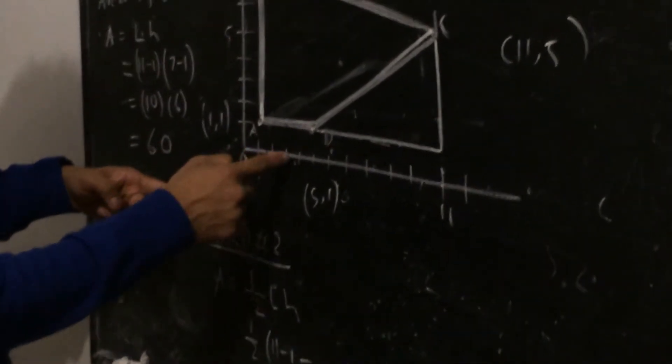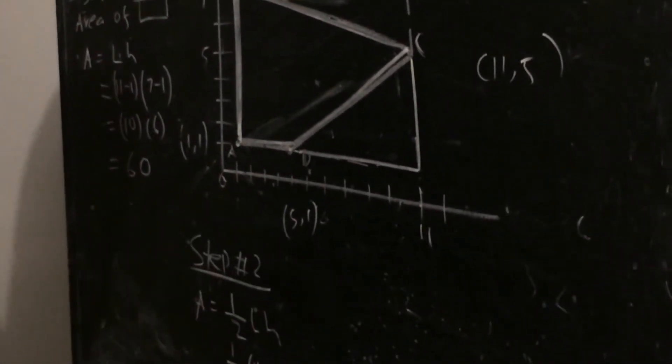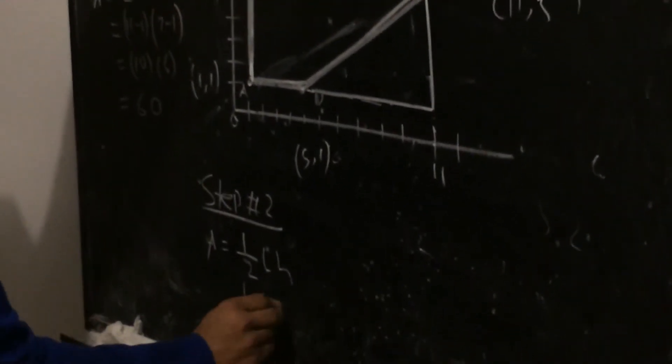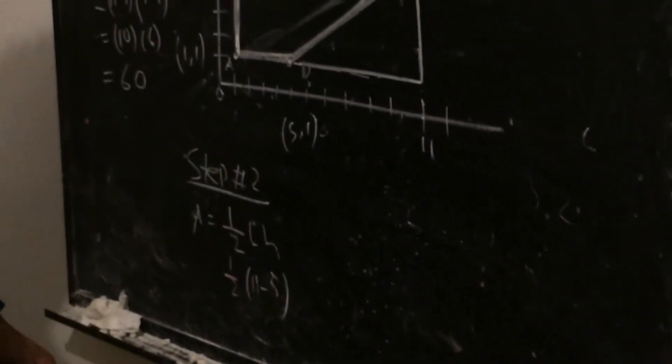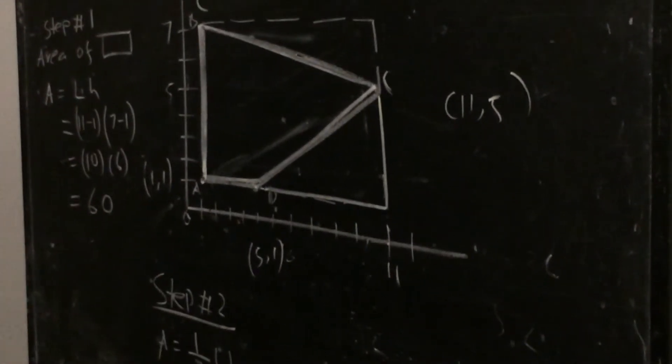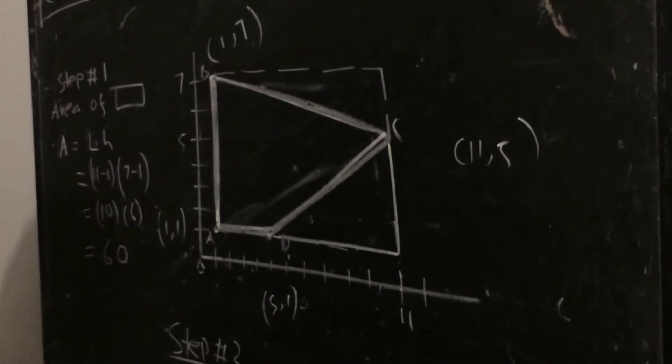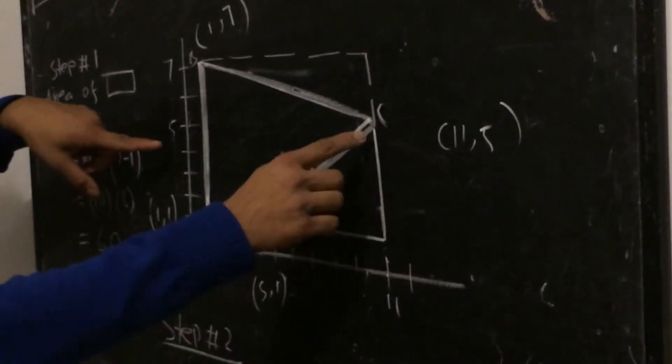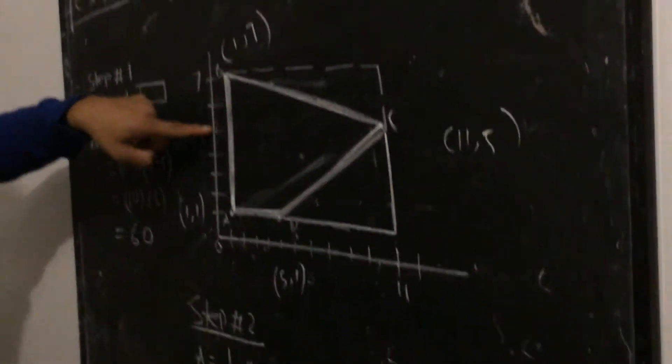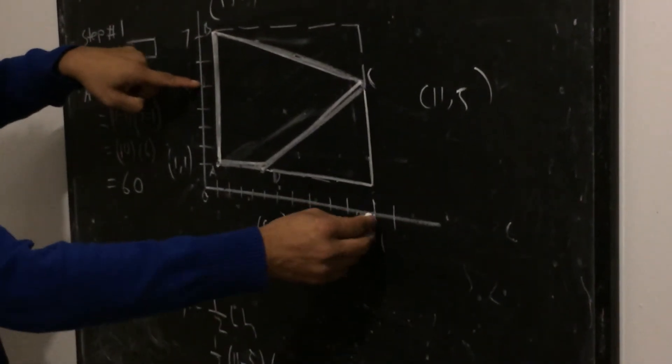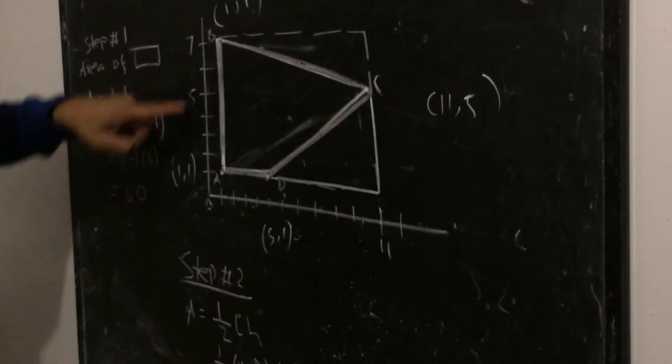So 1, 2, 3, 4, 5. So 11 minus 5 is fine. Now height, from here to here, what is the height? Let's see. This is 5, right? This is 5, right? But it's just from 1. So this is actually 4.